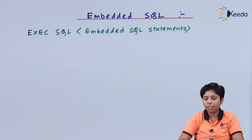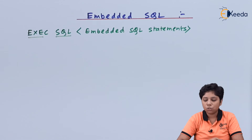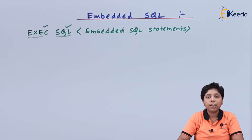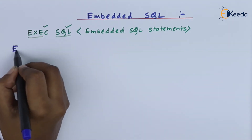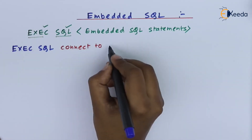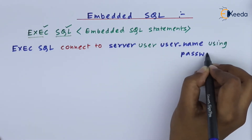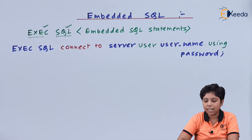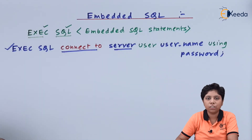Here we can see the EXEC SQL, and after that we can put the Embedded SQL statements. The EXEC SQL is used to start the Embedded SQL as a part of the host language. This statement provides that we are using an Embedded SQL, and the statement is 'connect to server', meaning we are connecting to the server from which we want to fetch the database.